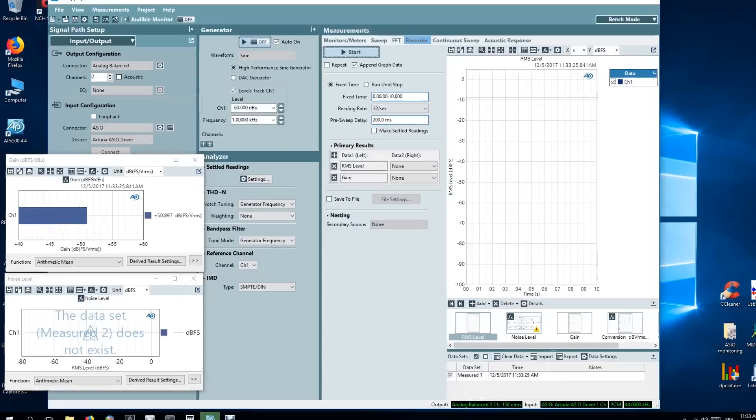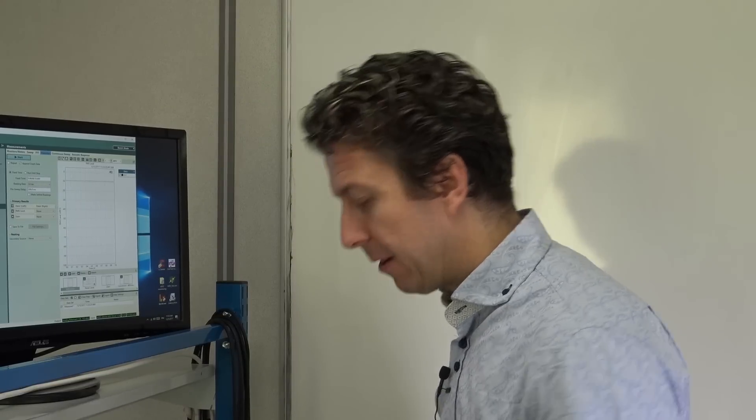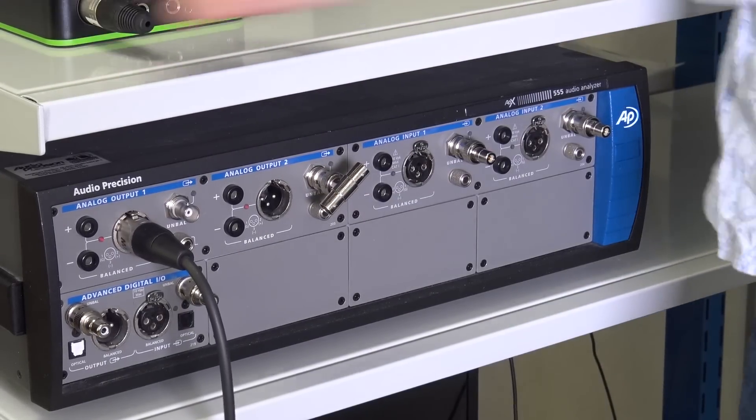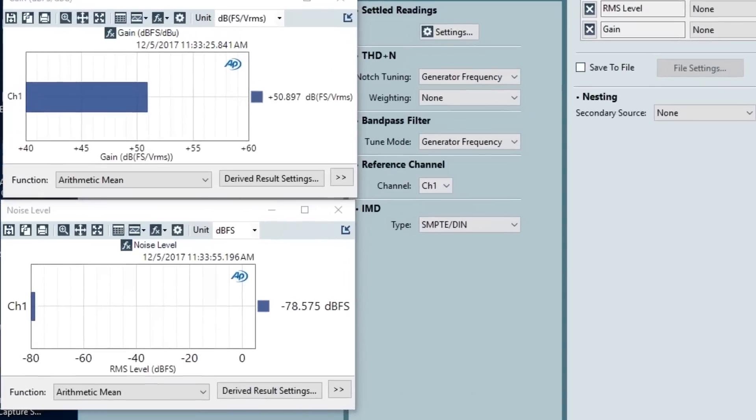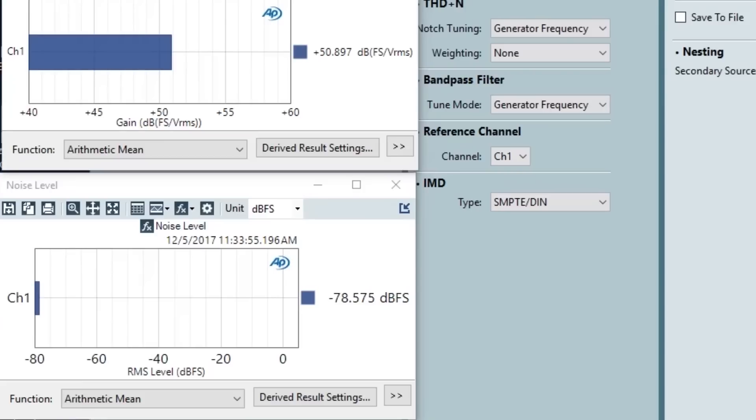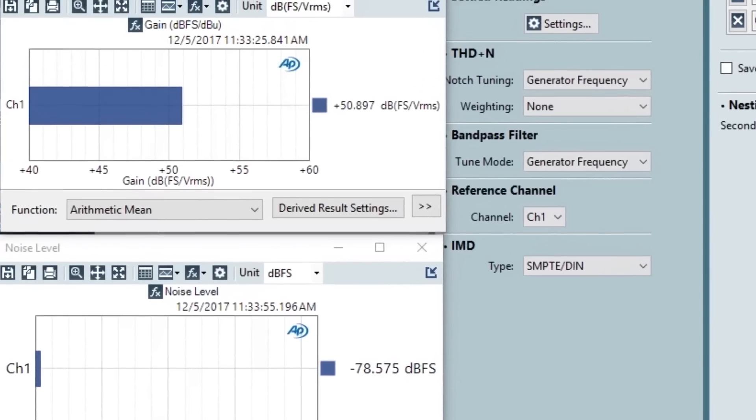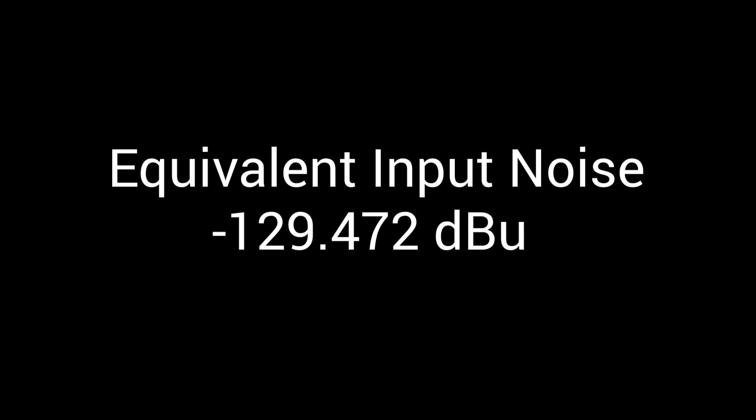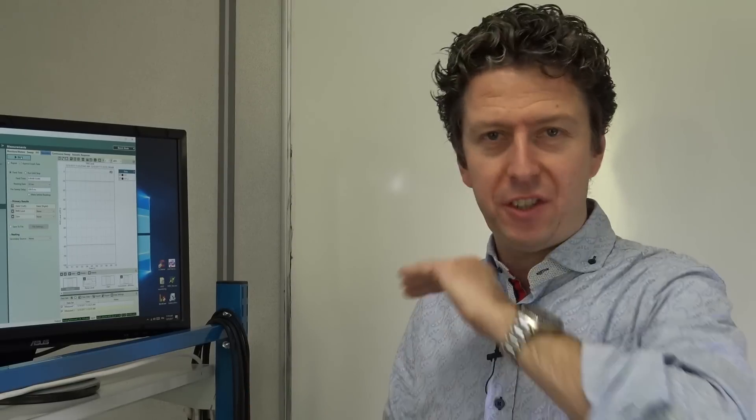So the input gain we're getting is 50.897 dBFS and the next measure we need to get is the background noise. So we need to change the input to be the 150 ohm load and we hit start and we have a noise limit of minus 78.575 dBFS. So with the amazing use of this telephone in calculator mode we take the noise signal, we take away 50.897 and we are left with a figure of minus 129.472 dBU. Linear. No A weighting, no Fletcher Munson curves. This is a purest response.